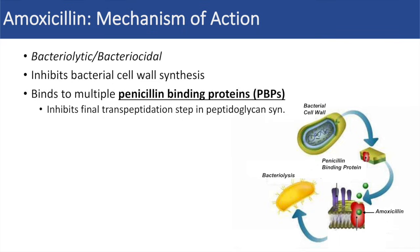Here's a quick schematic of what amoxicillin does. If you were to look at a bacterial cell wall, you'd be able to see these penicillin binding proteins. Amoxicillin binds to these penicillin binding proteins, which are critically important for the cross-linking of peptidoglycan, and specifically the final transpeptidation step. When amoxicillin is bound to penicillin binding proteins, the peptidoglycan is unable to cross-link, which means that the bacterial cell wall is dysfunctional. The bacteria would not be able to withstand any changes in osmotic pressure or any other stressors, which would lead to bacterial lysis, or the death of the bacteria.